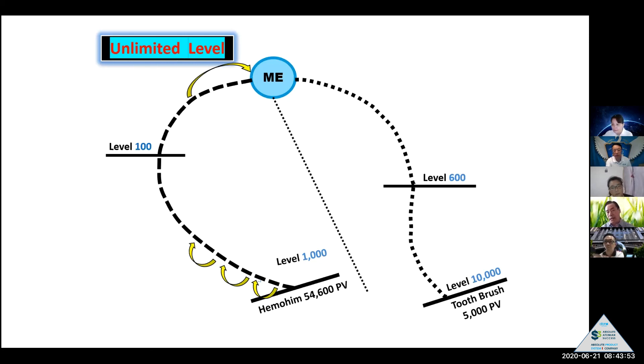And what about the right side? Christine, you are living in Singapore. One of your downline, your family and relative living in Canada, purchasing right side the toothbrush, 5,000 point value toothbrush. And Australia, one of the 10,000 down level purchased the toothbrush, 5,000.